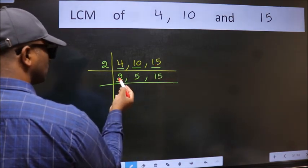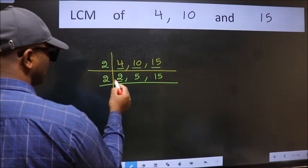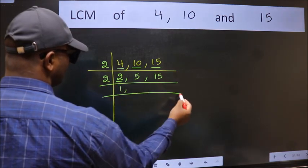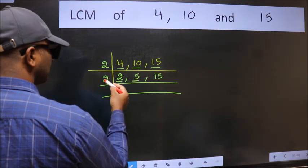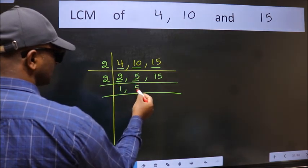Now here we have 2. 2 is a prime number, so 2 into 2. The other number 5, not divisible by 2, so we write it down as it is.